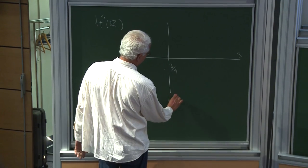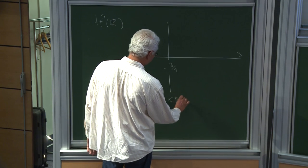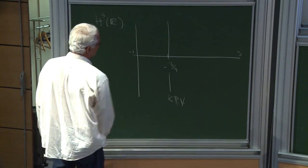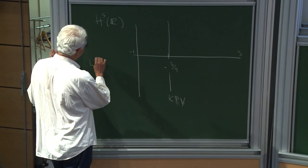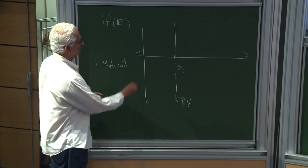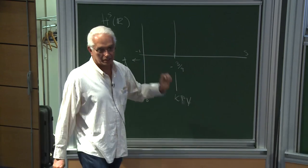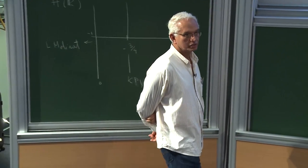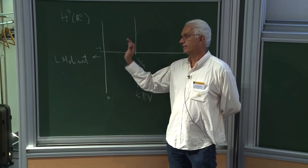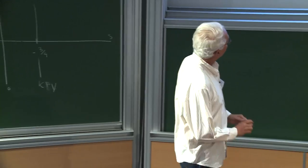This result — that -3/4 is the limit for contraction — is a result we proved with Carlos and Luis. Moreover, if you go to s = -1, this is a result of Molinet showing that you have no hope whatsoever of having continuous dependence, no matter what method you use. The data-to-solution map is not defined even in the distribution sense. So from -3/4 down, you cannot have contraction; from -1 down, you cannot have anything.